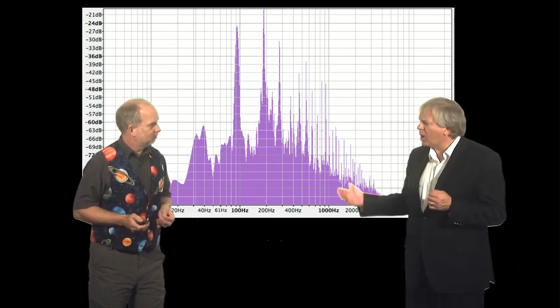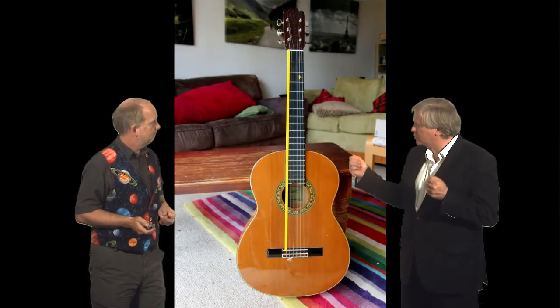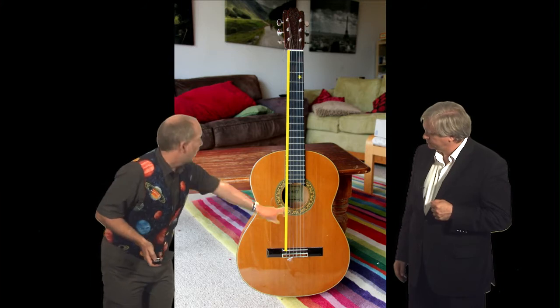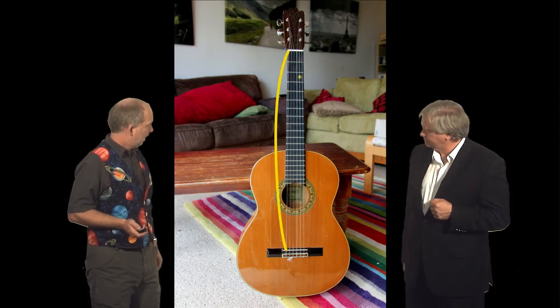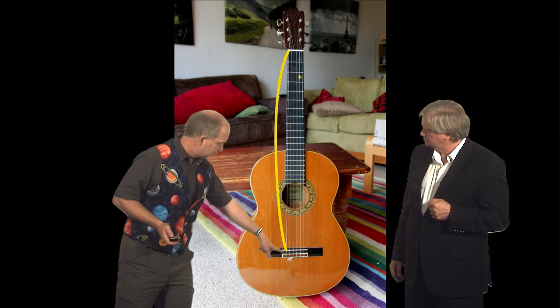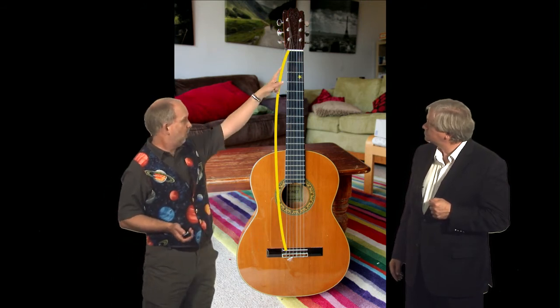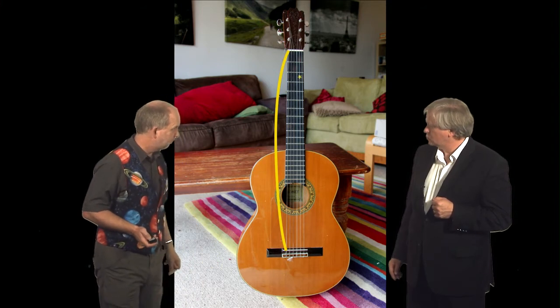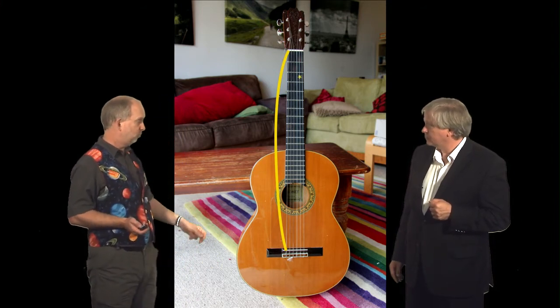So let's think about why this occurs. Let's just look at what one of these strings is doing. So here's a string. It's locked at both ends. And when you pluck it, it could vibrate like this. So it's got a fixed point, what's called a node at both ends, and an anti-node in the middle, where it vibrates as much as possible. And that will give you the fundamental note, the first.